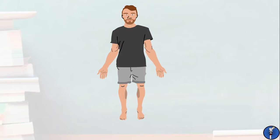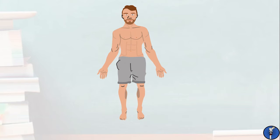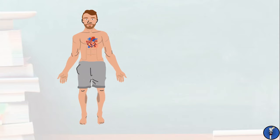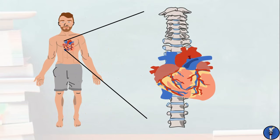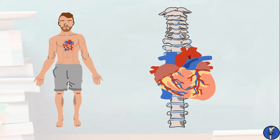We're going to start by considering the heart as the centre of the cardiovascular system. The heart sits in the thorax, anterior to the vertebral bodies. Its most superior part is approximately in line with the T4-T5 intervertebral disc, and its most inferior part is in line with the T8-T9 disc. This varies a bit with positioning and respiration, but it's a pretty good average.